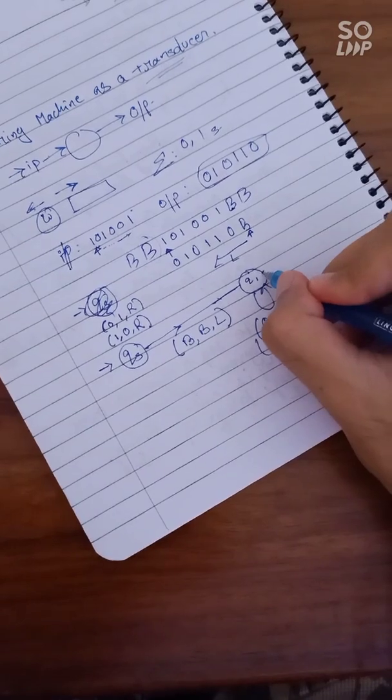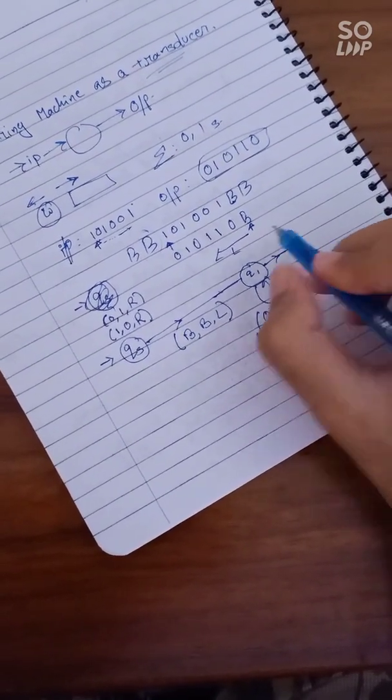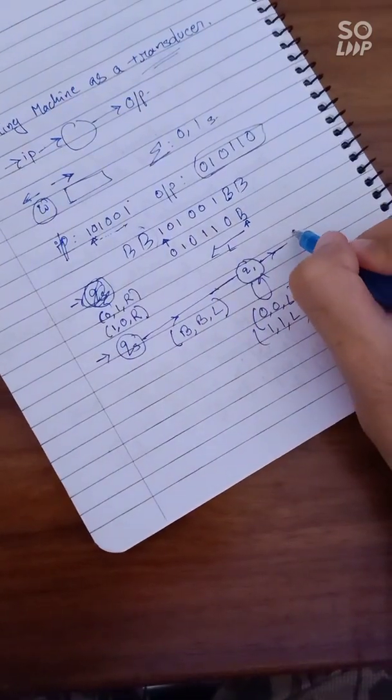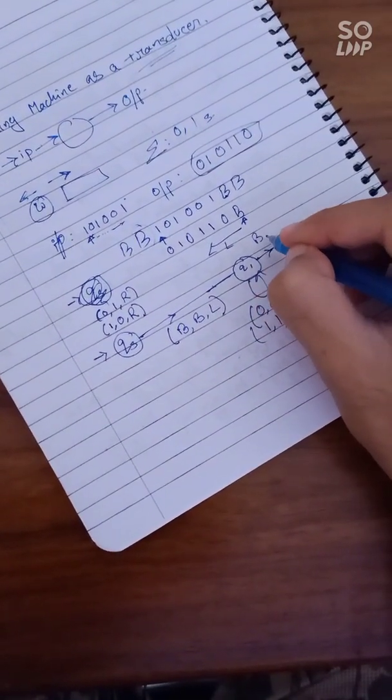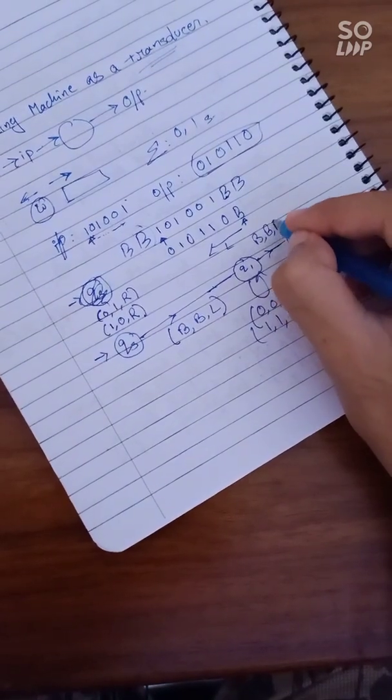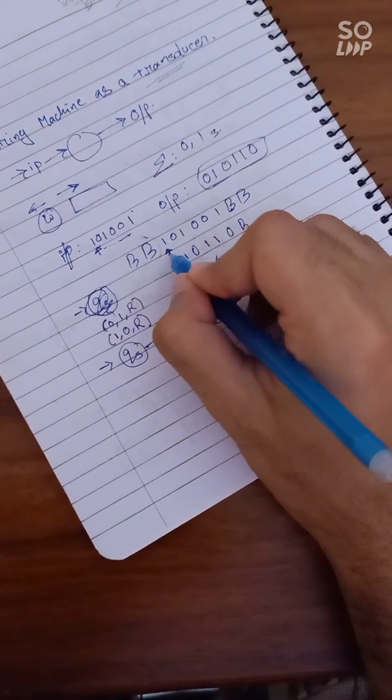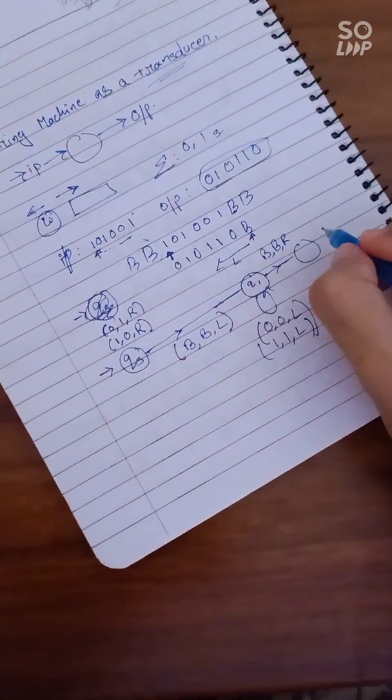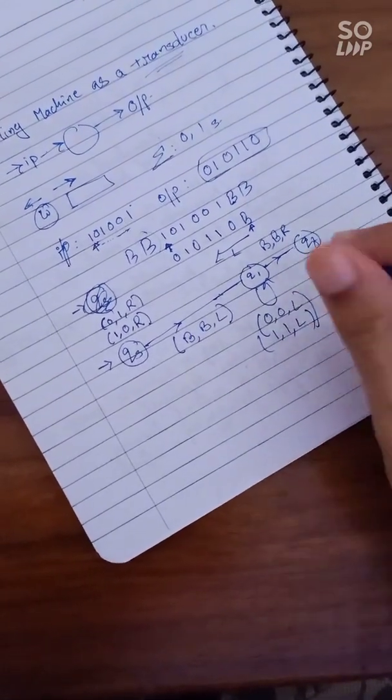And then, then the next state would be once you reach blank, once you reached again blank, keep it as blank, then move right. Now this right operation is just going to bring the pointer to the leftmost symbol.